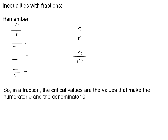We want to remind ourselves what happens when we take a positive and divide it by a positive number, what happens when we have a negative divided by a negative, a positive divided by a negative, and a negative divided by a positive. A positive divided by a positive will have a positive overall result. A negative divided by a negative will also have a positive result. A positive divided by a negative will have a negative result, and a negative divided by a positive will have a negative result.